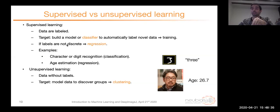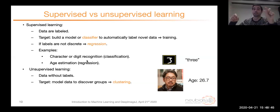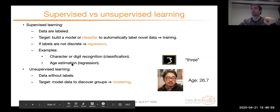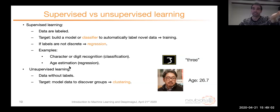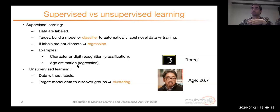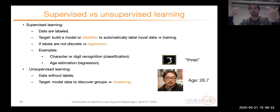Summarizing: in supervised learning, data are labeled and the target is to build a model or classifier to automatically label new data — a process we call training. If the labels are not discrete, we have a regression problem. For example, digit recognition gives 10 discrete classes — that's a classification problem. If I want to estimate age from a facial image, the age can be any real number — that's a regression problem. In unsupervised learning, the data don't have labels and the target is to model the data and discover groups, what we call clusters.